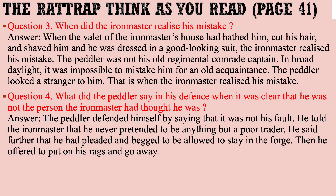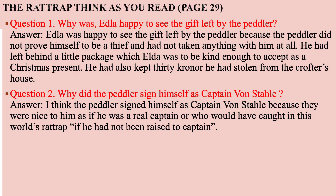Question number four: What did the peddler say in his defense when it was clear he was not the person the Iron Master had thought? Answer: The peddler defended himself by saying it was not his fault. He told the Iron Master that he had never pretended to be anything but a poor trader. He said he had pleaded and begged to be allowed to stay in the forge, and then offered to put on his rags and go away.